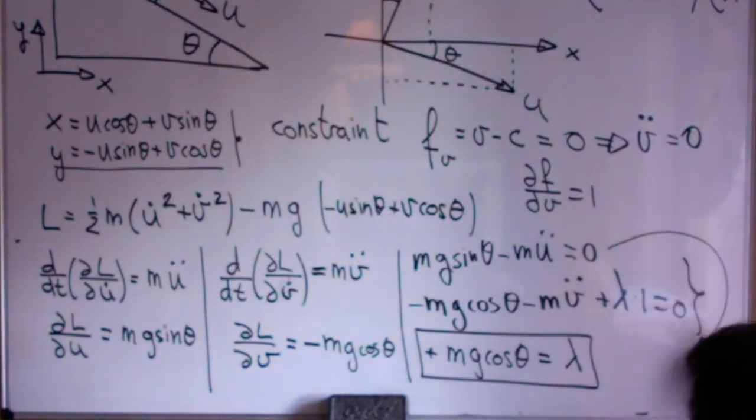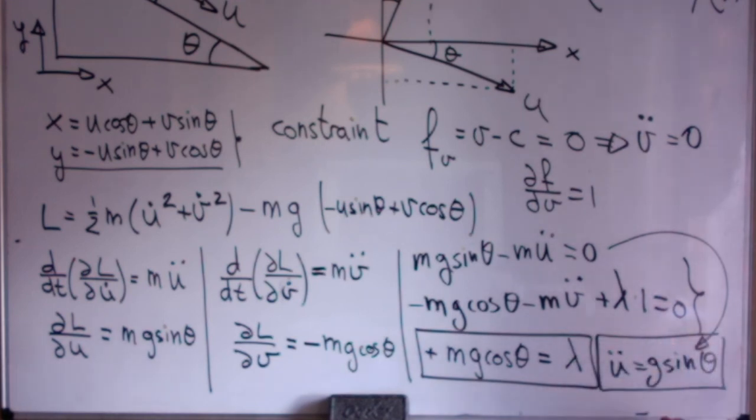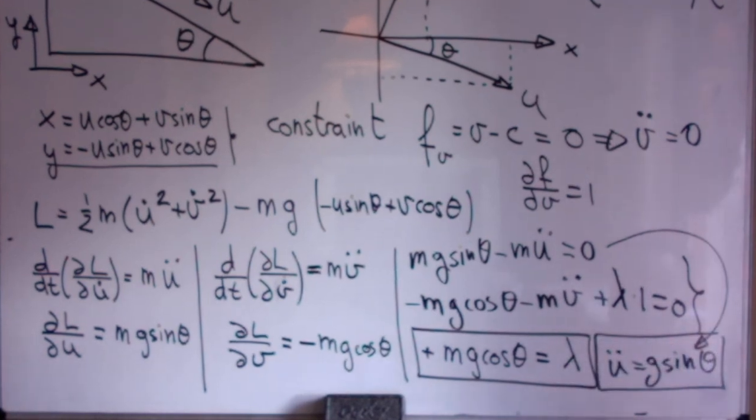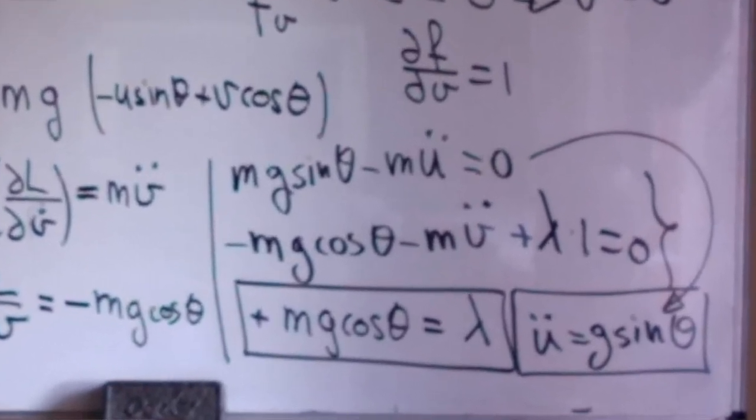One of them is the equation of motion, that the acceleration is g sine of theta, and the other one, the constraint in the v direction, which is the normal force, which is mg cosine of theta, as we learned a long time ago in kindergarten.